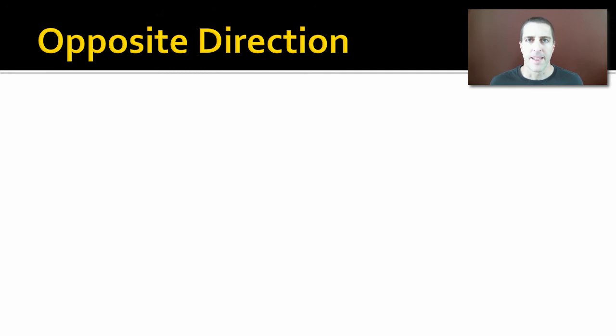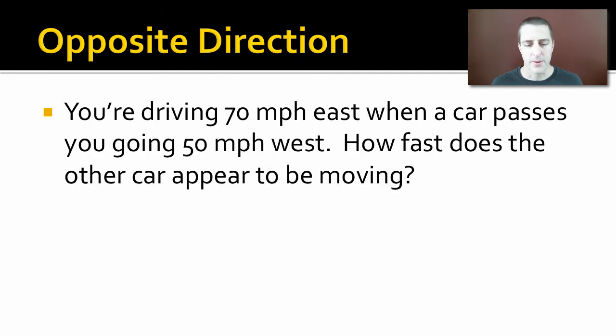Let's try another one. Let's say we're going opposite directions. So you're driving down the road going 70 miles an hour east, and a car is coming the other direction on the other side of the road going 50 miles an hour west. What is the relative motion between the two objects?